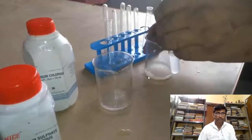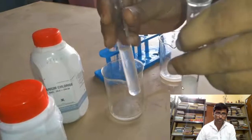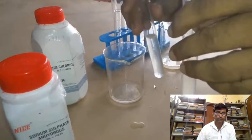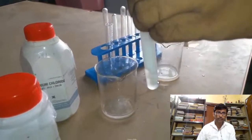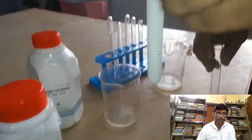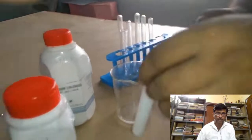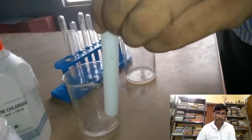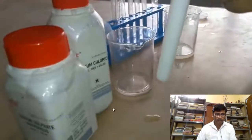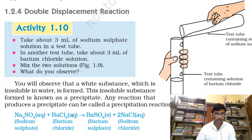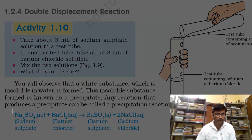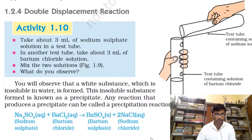Now both solutions are in two test tubes, and what we are going to do is mix the two solutions so that they can react. Barium chloride and sodium sulphate are now in the two test tubes. When you mix them together, you immediately see that you get a white precipitate — this is barium sulphate. We will soon come to a discussion of what a precipitate is.